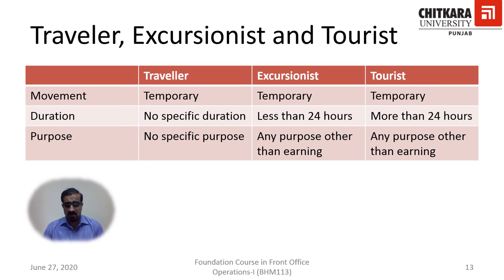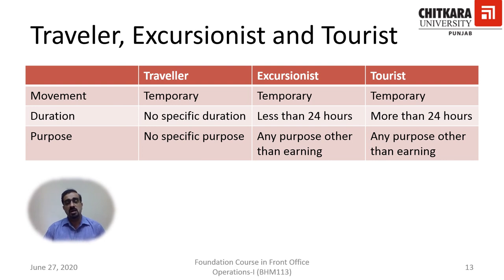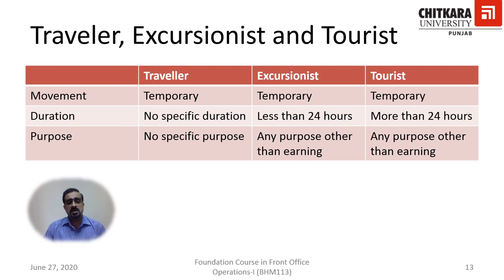Regarding duration: for a traveler, there is no specific duration — they may go and come back with no fixed duration. For an excursionist, for example, there is a local attraction in your city — you go, visit, and come back. A visit to a zoological park or national park may take only a couple of hours. So you become an excursionist, not a tourist. But if you travel to your destination for more than 24 hours, you become a tourist — domestic or international. Regarding purpose: a traveler can travel for economic purposes like earning or business, but excursionists and tourists must travel for a purpose other than earning.